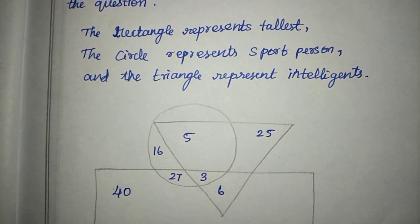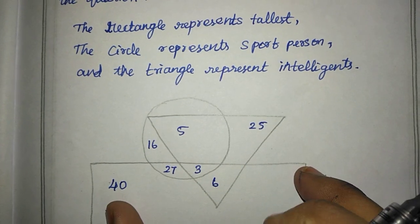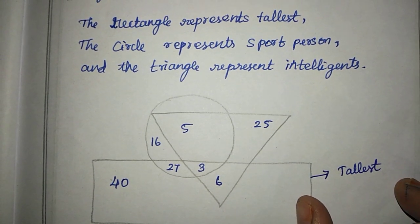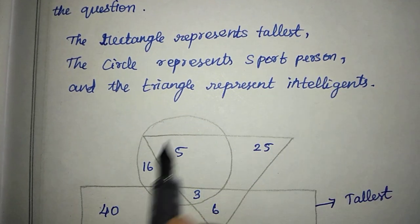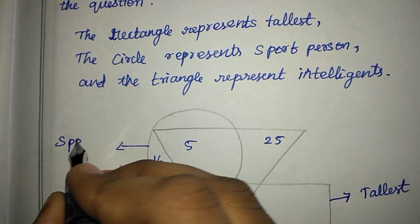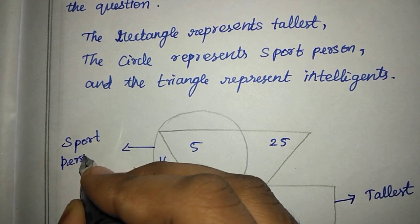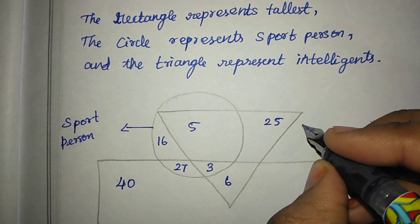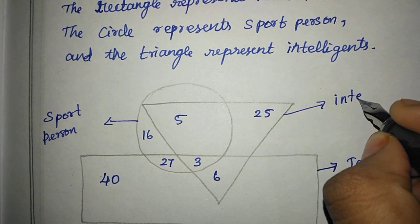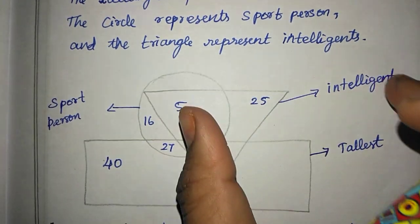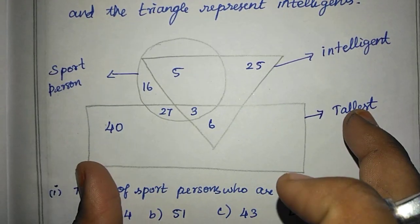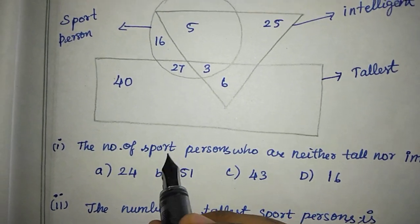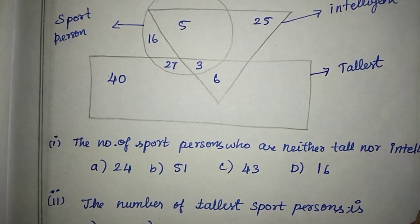The rectangle represents the tallest. The rectangle represents the tallest. The circle represents the sportsman — sport person. And the triangle represents intelligent. The question will be: the number of sport persons who are neither tall nor intelligent.